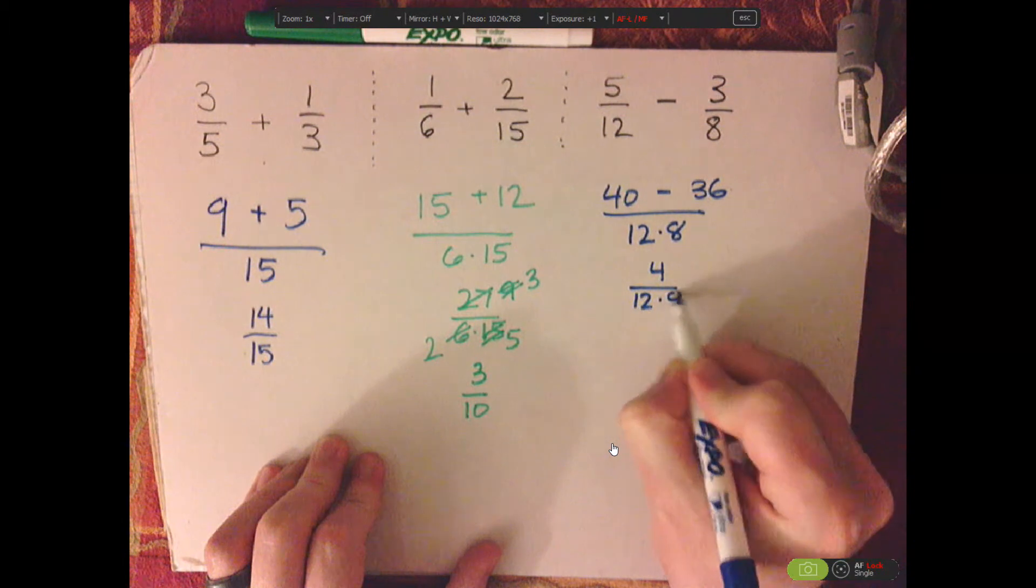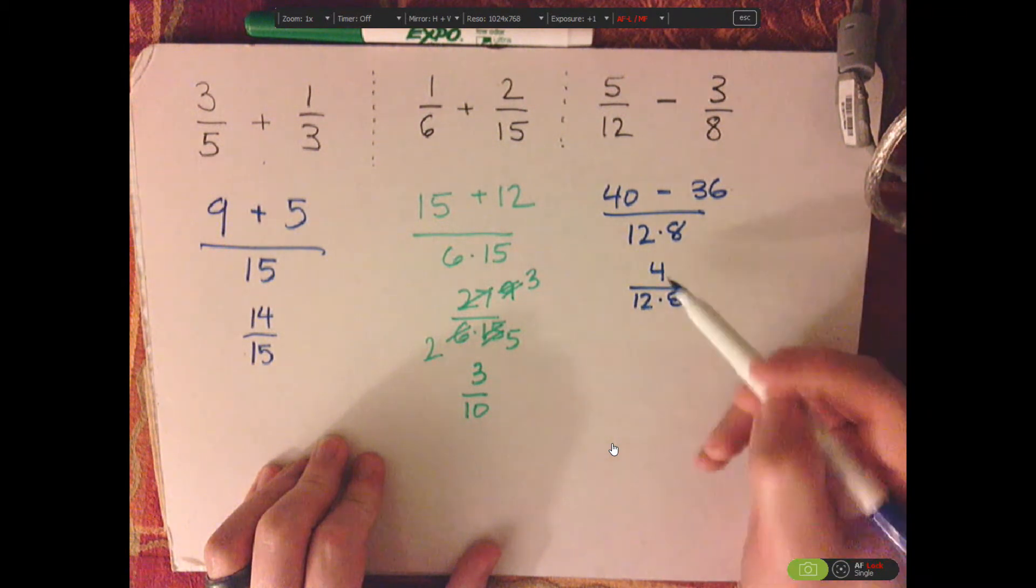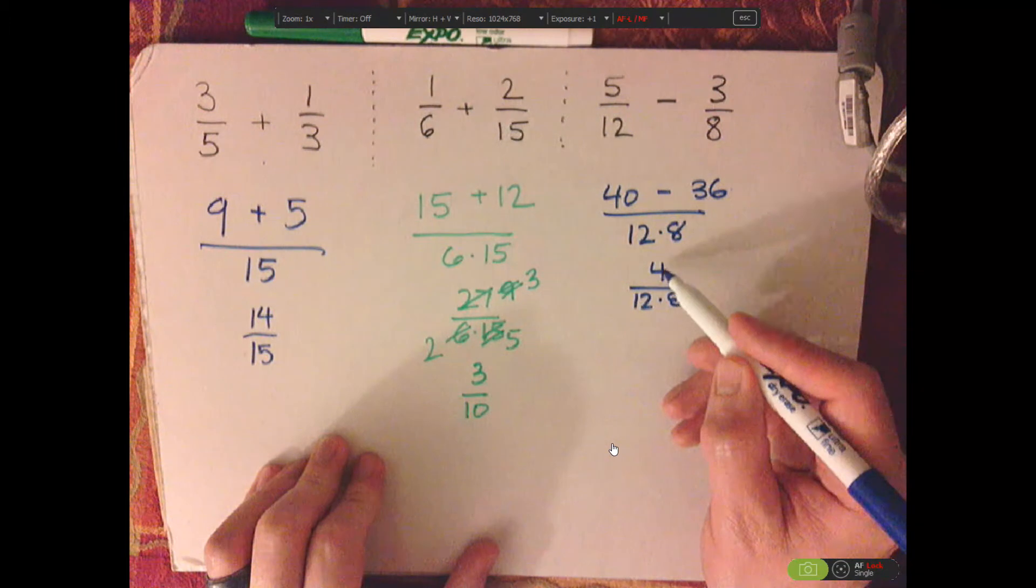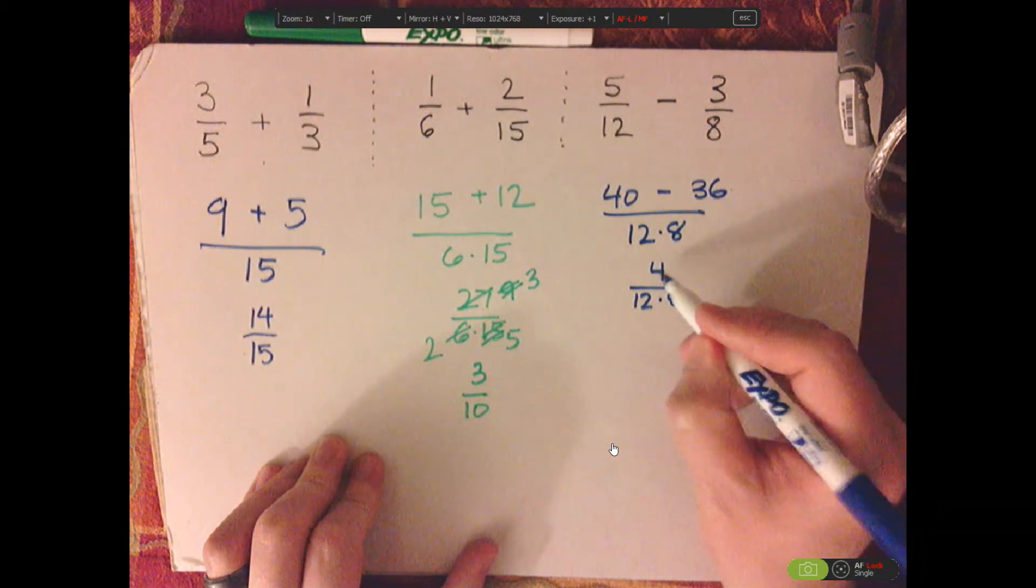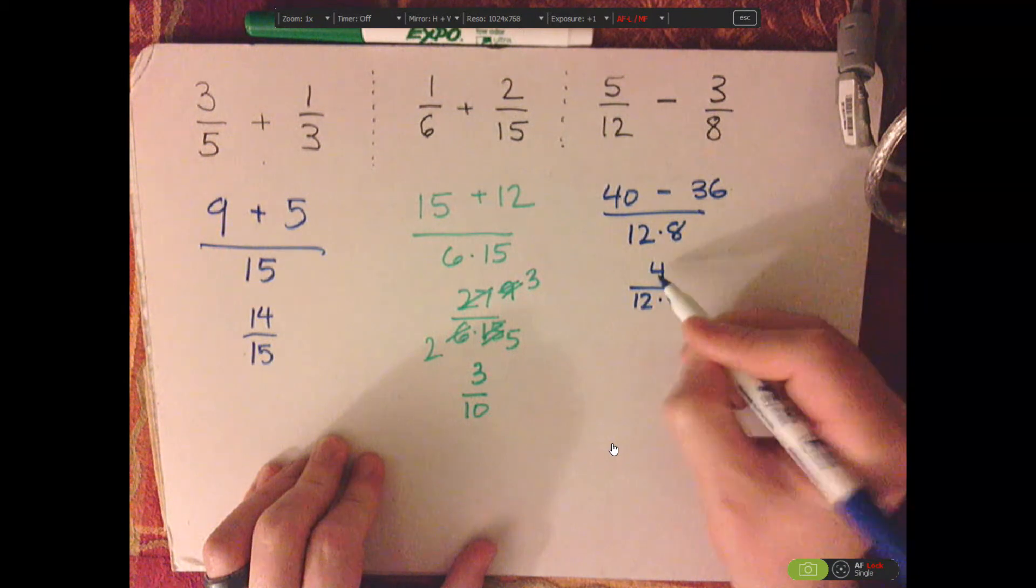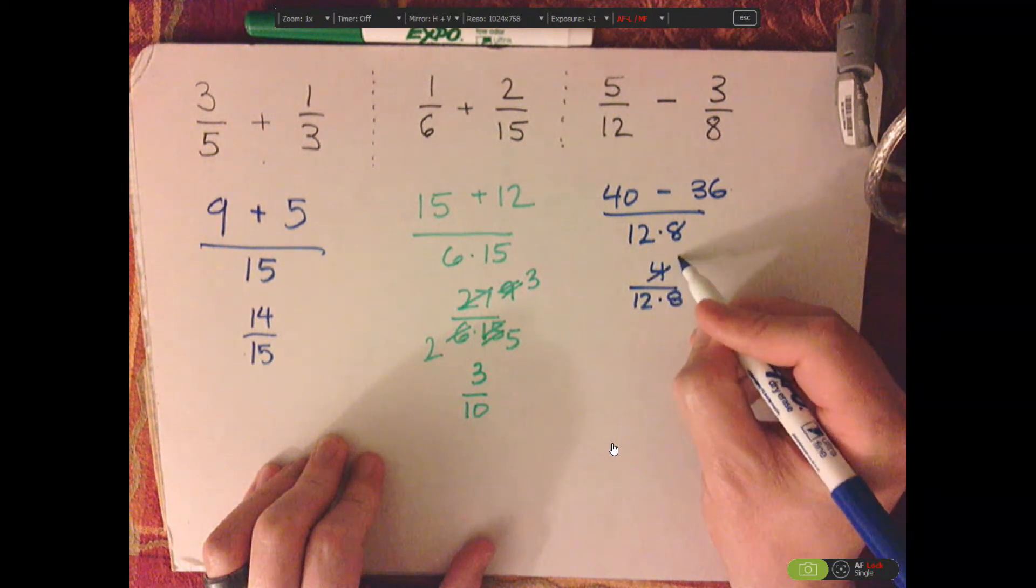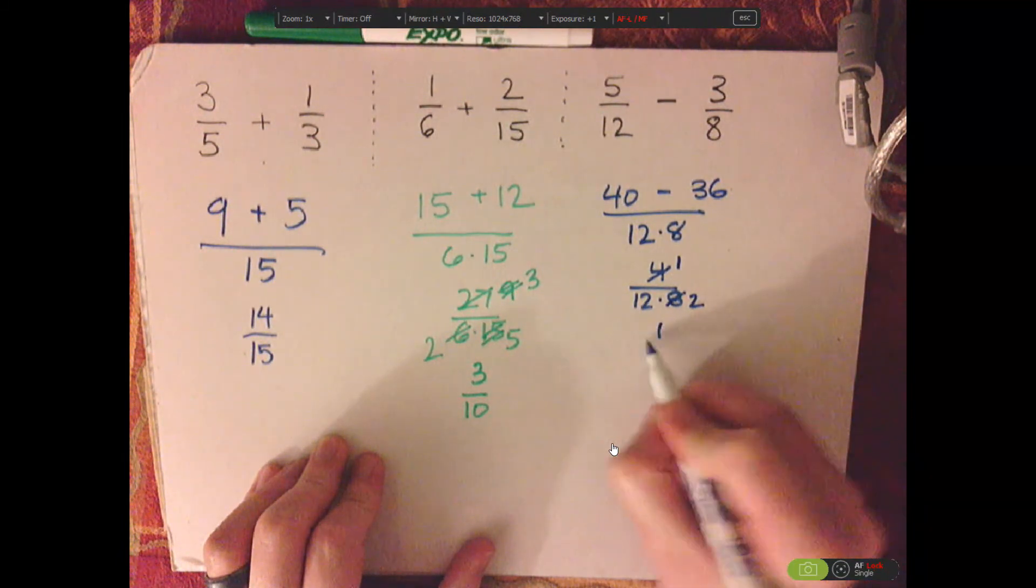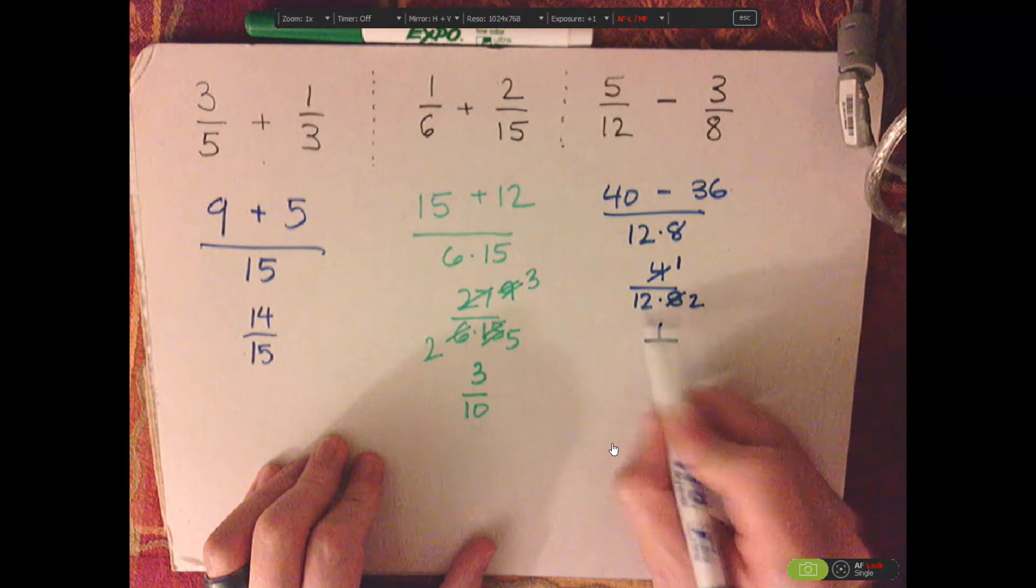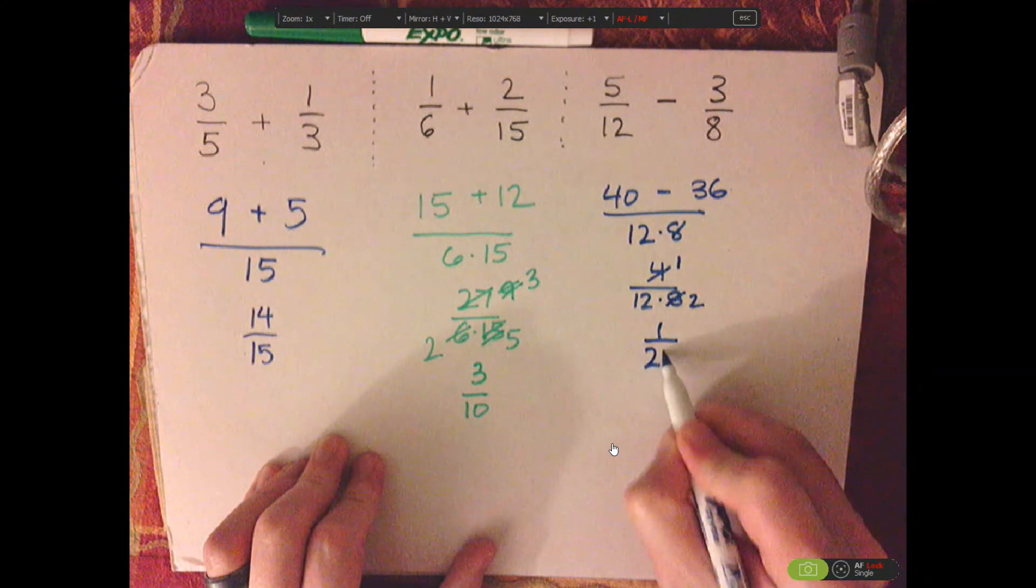12 times 8. Let's see. I'll do the 8. So 4 can go into either of them. You just want to do it once. So 4 goes into 4 once. 4 goes into 8 twice. So that's 1 in my numerator. And then 12 times 2 is 24.